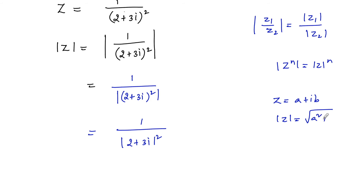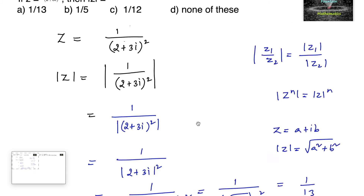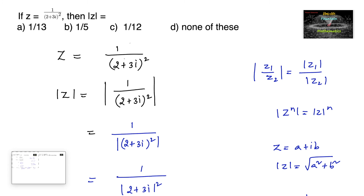So we can write 1 upon (root of 2 squared plus 3 squared) whole square, which is equal to 1 upon (root of 4 + 9 = root 13) whole square, which is equal to 1 upon 13. So 1 upon 13 is the answer, which is option A.